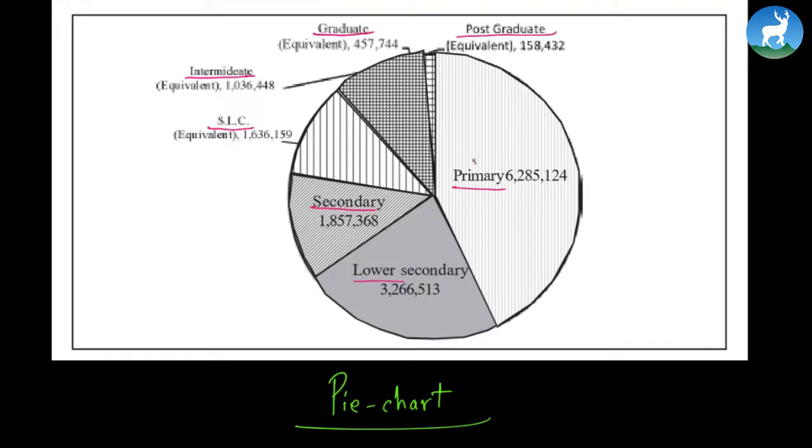Similarly, 3,266,513 people passed the lower secondary level, which is grade 6 to 8. There were 1,857,368 people who passed the secondary level, which means grade 9 to 10. The people who passed intermediate level or equivalent level, which is also known as plus two level, was 1,36,448. People who passed graduate level is 457,744. And when it comes to postgraduate level, only 151,432 people passed the postgraduate level. This shows the educational level or the quality of Nepal. This is a two dimensional pie chart once again, because only two axes are used, x and y. Point of reference again.